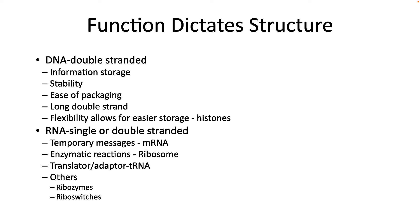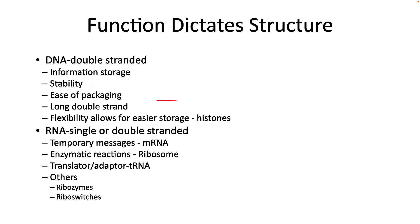Both DNA and RNA have their place. DNA is double-stranded — having a double strand provides a second copy of the information, allowing many repair mechanisms to function. Double strands also protect the bases from chemical attacks. The lack of a 2' hydroxyl makes DNA more stable and flexible, making it easier to wrap around structures like histones for storage.